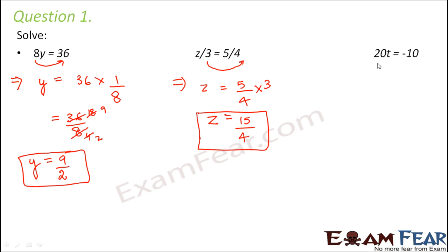20t equals minus 10. So what is the meaning of 20t? It basically means 20 into t. Now when you want to move 20 to right hand side, it becomes divided by, so it becomes minus 10 divided by 20. Therefore you can say t equals minus 1 by 2.